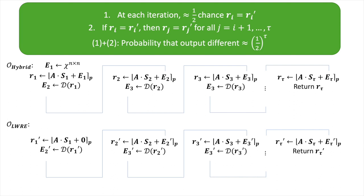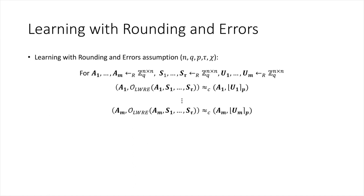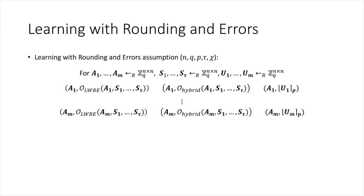This LWRE oracle induces a natural computational problem called the learning with rounding and errors problem, which asks an adversary to distinguish outputs of the LWRE oracle from those of a uniform sampler. Using the same argument, we can show the LWRE problem is hard assuming LWE. Specifically, we consider the intermediate hybrid oracle and show that as long as tau is large enough compared to q, the outputs of the LWRE oracle and the hybrid oracle are statistically indistinguishable.